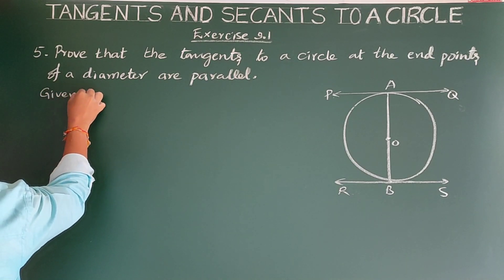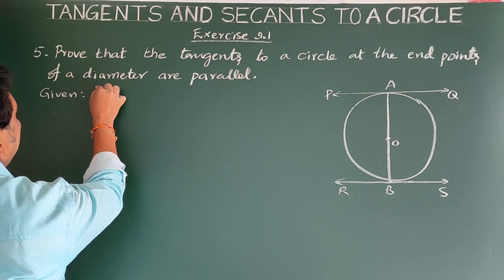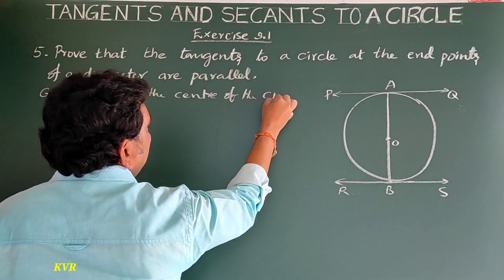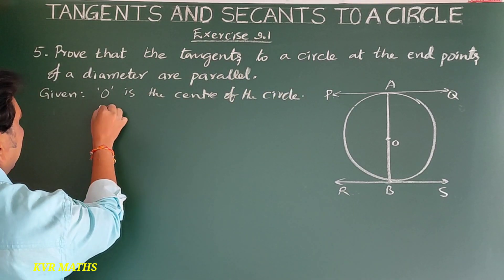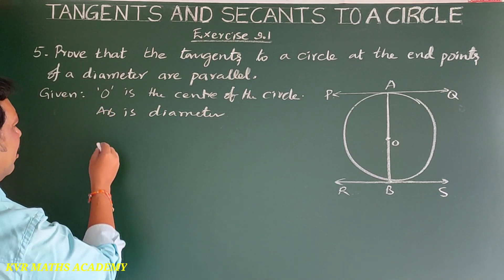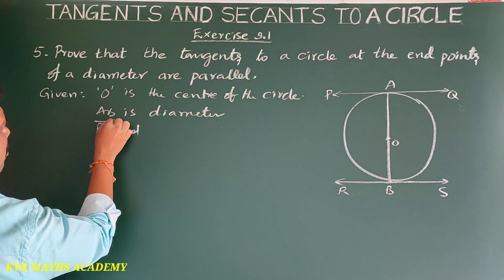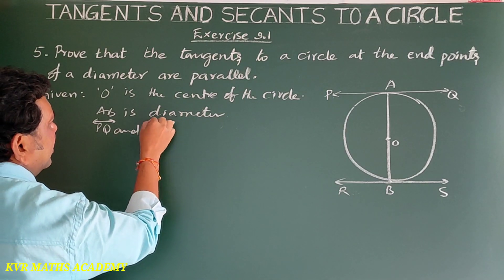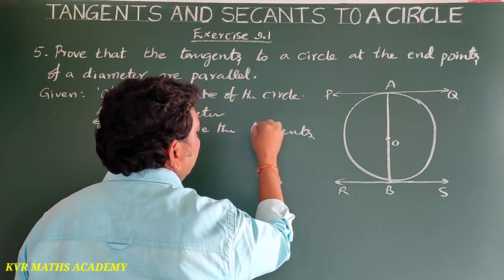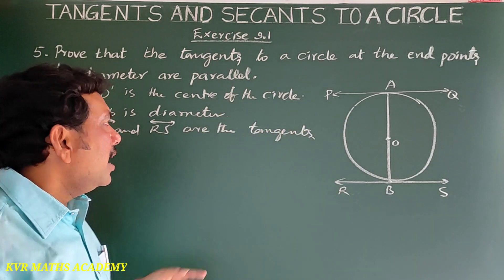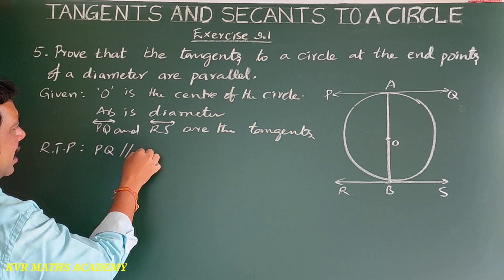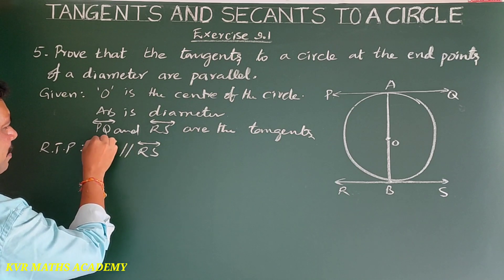Given: O is the center of the circle, AB is the diameter, and PQ and RS are the tangents. RTP: PQ is parallel to RS. We know that the radius of the circle is perpendicular to the tangent at the point of contact. So OA is perpendicular to PQ, and OB is perpendicular to RS.